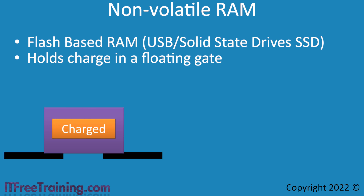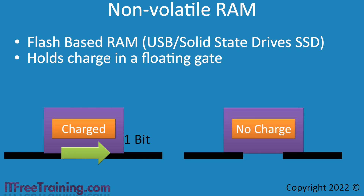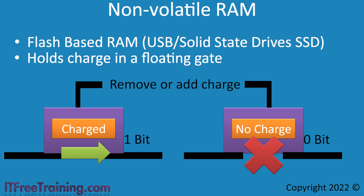Like a transistor, there is a connection in and out of the cell, which acts like a switch. If there is charge in the cell, power is allowed to flow through, which means the cell is holding a 1 bit. In contrast, if the cell is not holding a charge, the power will not be allowed through — meaning the cell is holding a 0 bit. In order to change the charge in the cell, another connection is made to the cell. This connector can either add a charge or drain the cell so that there is no charge.